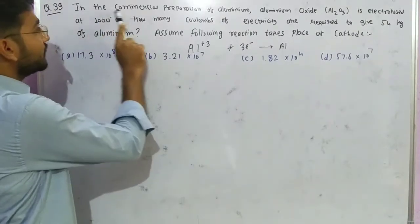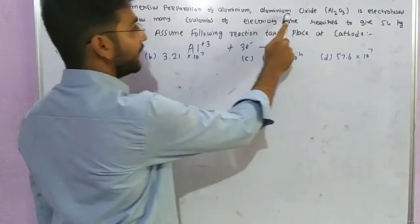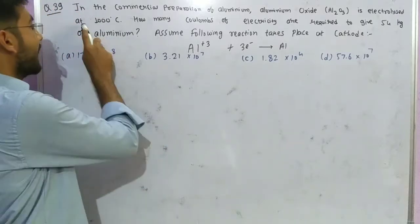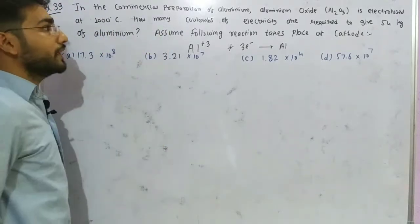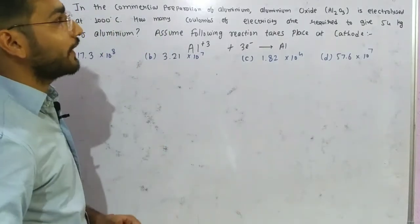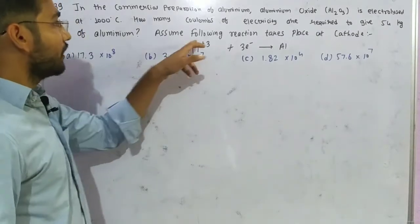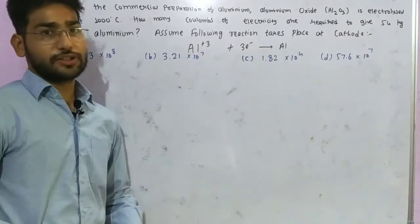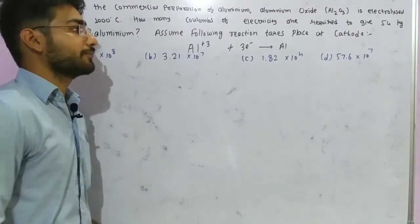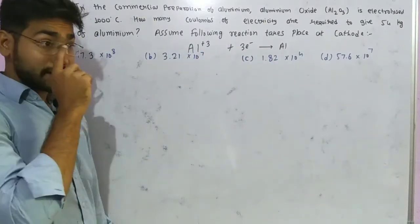Here is the question: In the commercial preparation of aluminum, aluminum oxide is electrolyzed at 1000 degrees Celsius. How many coulombs of electricity are required to give 54 kilograms of aluminum? You follow the reaction that takes place at the cathode. This is the reaction which takes place at the cathode.